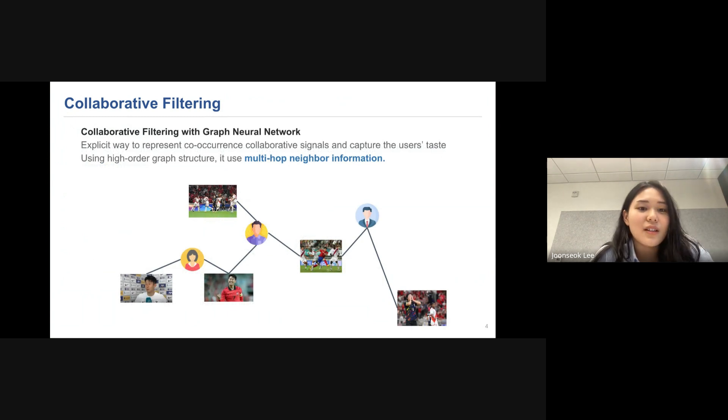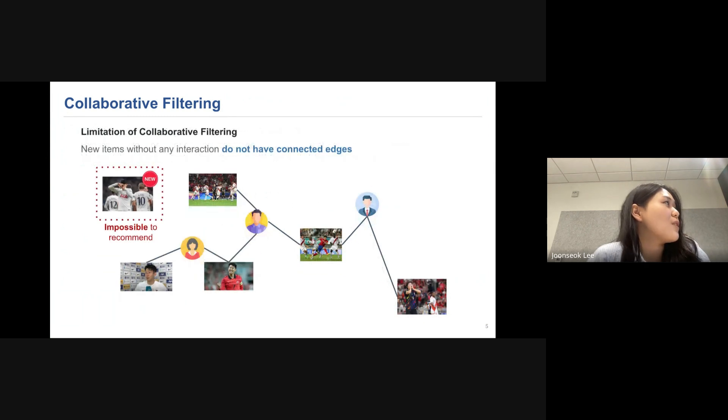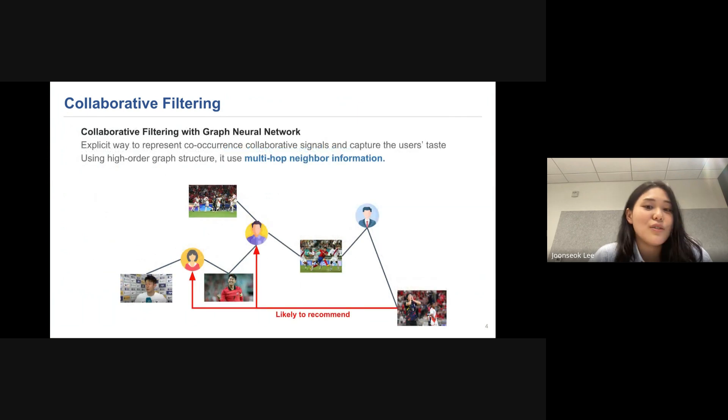Recently, collaborative filtering has developed with graph neural networks, which is the most explicit way to represent co-occurrence collaborative signals and capture user taste. By using a high-order graph structure, it uses multi-hop neighbor information. What I mean by this is, if the video on the right, a video can be recommended to the multi-hop users, for example, like two, three or more hop users.